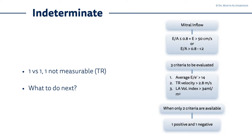If you have only two of the three criteria present — for example, very often the TR velocity is not accurately measurable — you have only two criteria: the average e/e' and the LA volume index. With only one positive and one negative, we simply do not know. In this situation, when you only have two available criteria, such as the average e/e' above 14 or the LA volume index above 34 mL/m², and you cannot measure tricuspid regurgitation accurately.